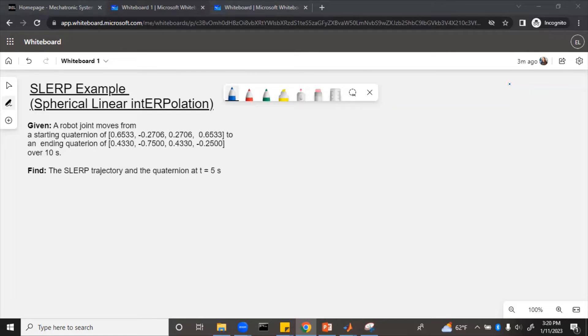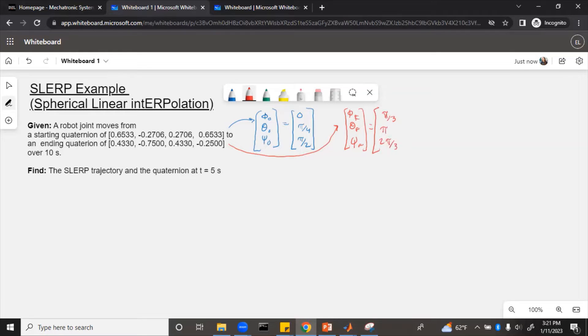What do these quaternions even mean? It can be really difficult to visualize these. So what these would correspond to in roll, pitch, and yaw, the starting one equals zero, pi over four, and pi over two radians. And the ending one corresponds to roll, pitch, and yaw of pi over three, pi, and two pi over three radians.